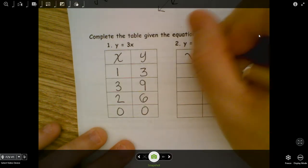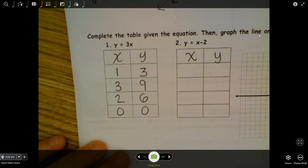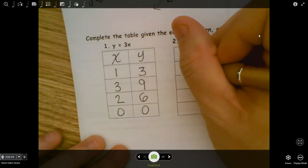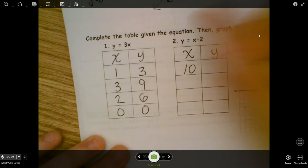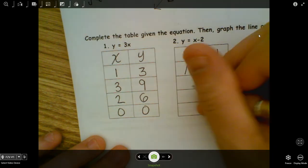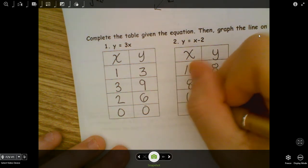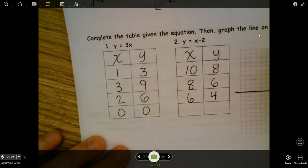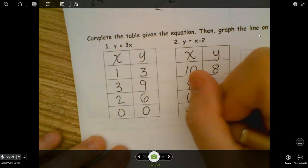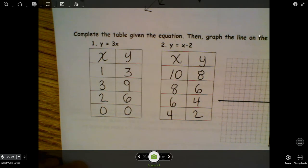My other one is X minus 2. Okay. Well, now that I'm getting smaller, I could start with 10. Minus 2 is 8. I could go to 8. Minus 2 is 6. I could go to 6. Minus 2 is 4. I could go to 4. Minus 2 is 2. And then I will put them on the graph in the next video.